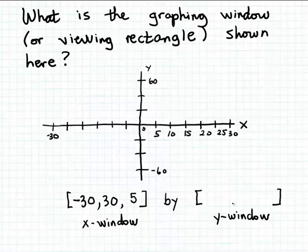Now let's fill in our y-window, and then together this constitutes the graphing window. We can see the minimum value that's been plotted on the y-axis is minus 60, so we write that value first. And the maximum value that's plotted on the y-axis, that's positive 60. And again, for this third value, we want to indicate the scale.